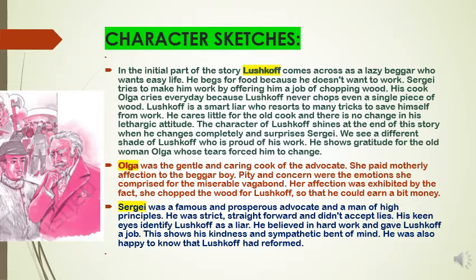Her affection was exhibited by the fact that she chopped the wood for Lushkov so that he could earn a bit of money. Olga gave a selfless affection to Lushkov. She did everything so that Lushkov could have a better life. And finally, she wins because she is rewarded with a transformed Lushkov. It is because of her virtue that Lushkov becomes a transformed, altogether different person.